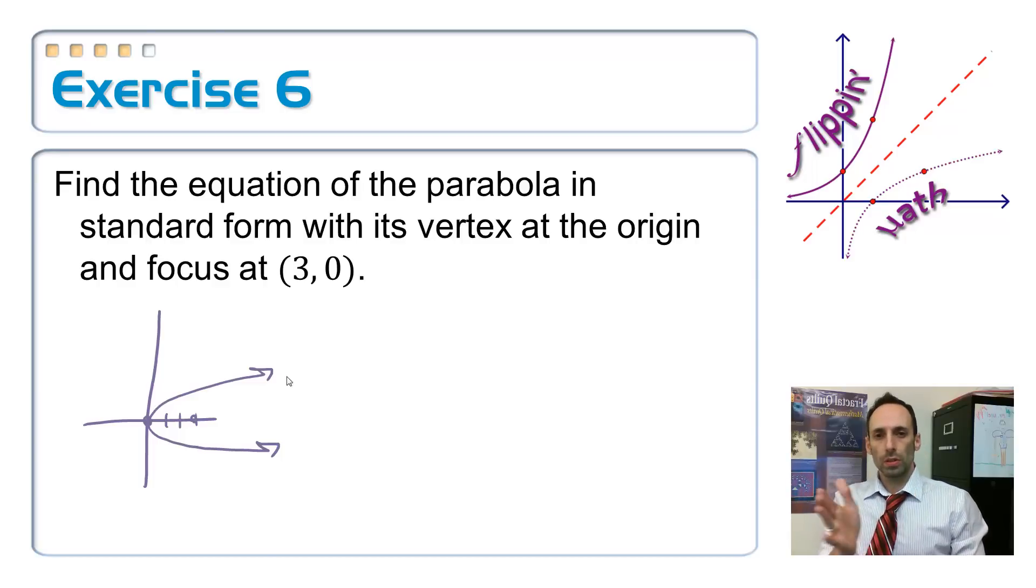Okay, so since it's opening to the right, I know that I have to have a y squared in there, right? And whenever the vertex is at the origin, it's just, well, 0, 0 is in there for h, k. Simplifies to y squared is equal to 4px.